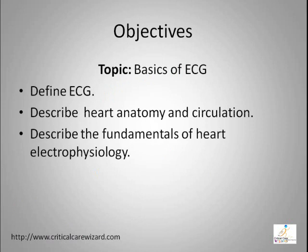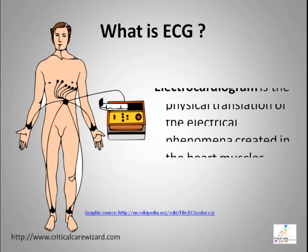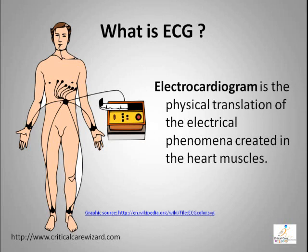The learning objective of this ECG interpretation module is to define ECG and to describe the basic heart anatomy and circuits, and describe the fundamentals of heart electrophysiology. As human heart muscles create an electrical conduction, the physical translation to that phenomenon is called electrocardiogram or ECG.